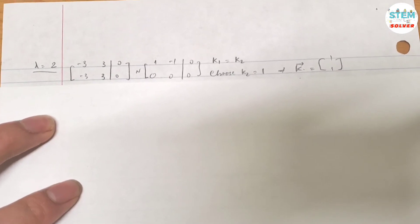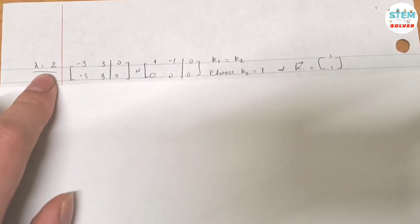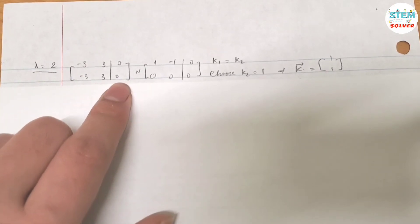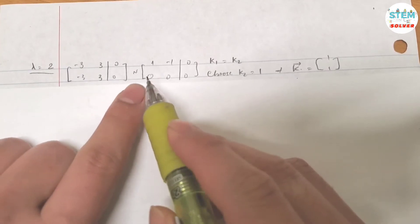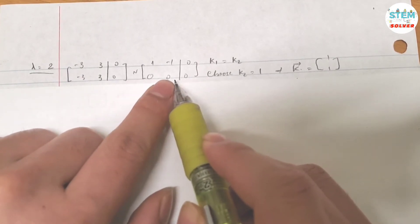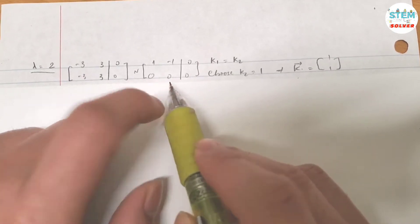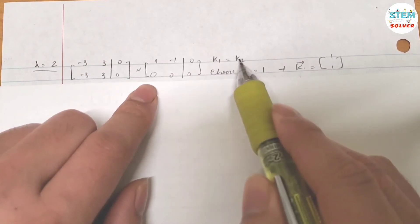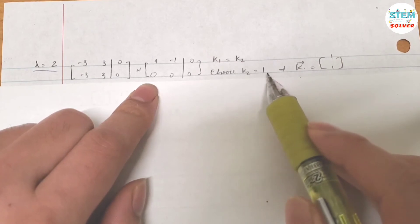Alright, so for lambda equals 2, plug it into the previous equation, which is A minus lambda I. I got this matrix augmented with zero. If I reduce it down, I got infinite solutions. So for this one, I have k1 equals k2. If I choose k2 equals 1, then k1 is also 1.